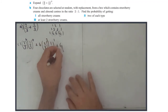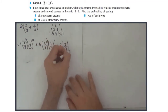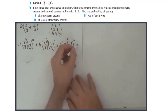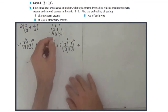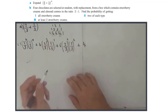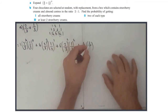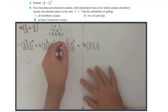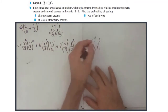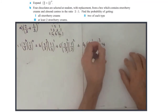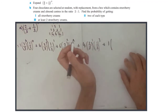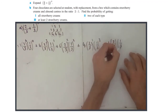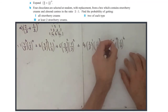Plus six times two-thirds squared times one-third squared, plus four times two-thirds to the power of one times one-third cubed, and the last term plus one times two-thirds to the power of zero and one-third to the power of four.